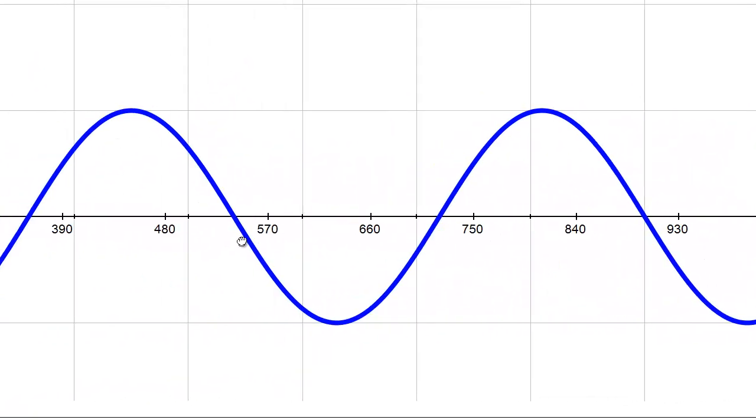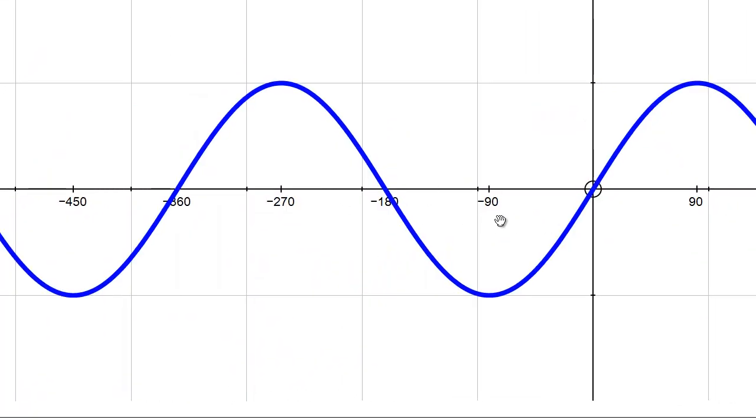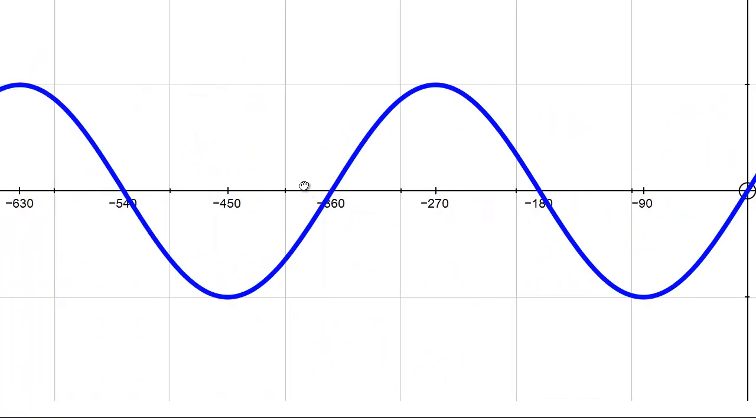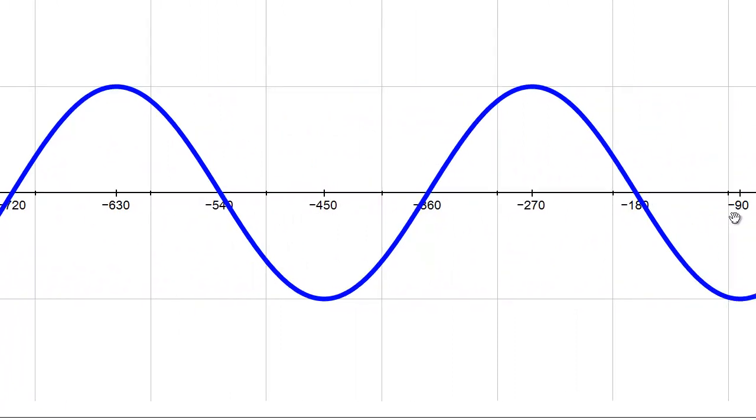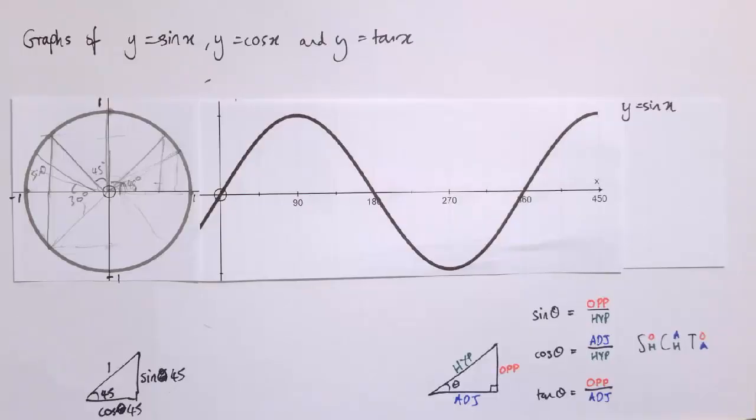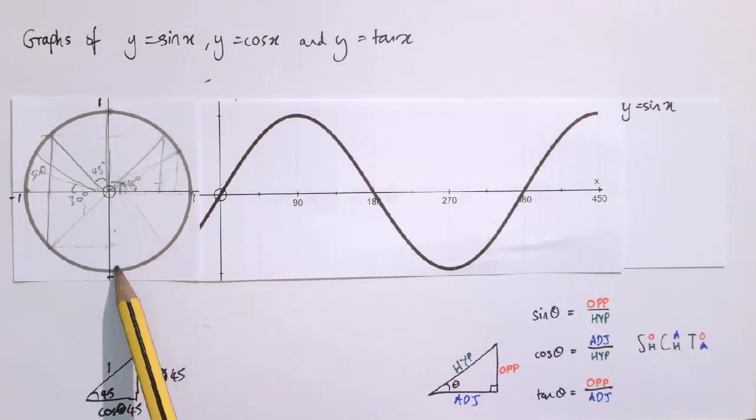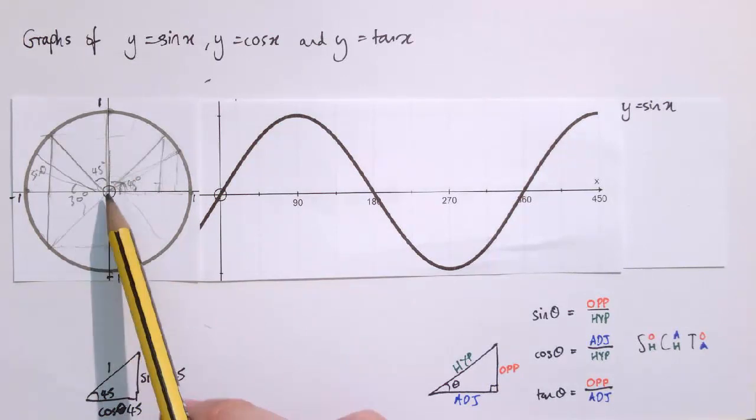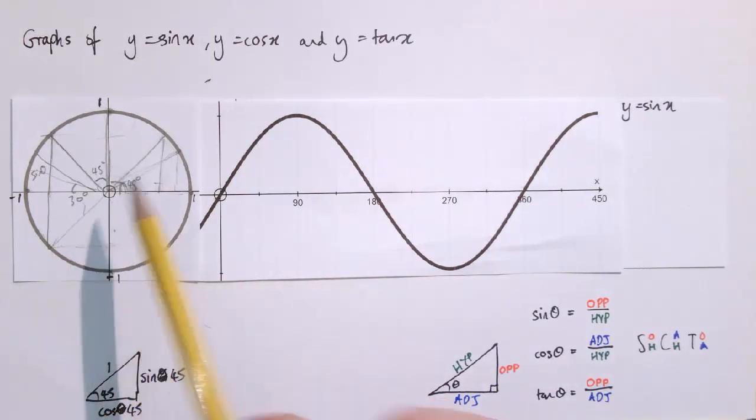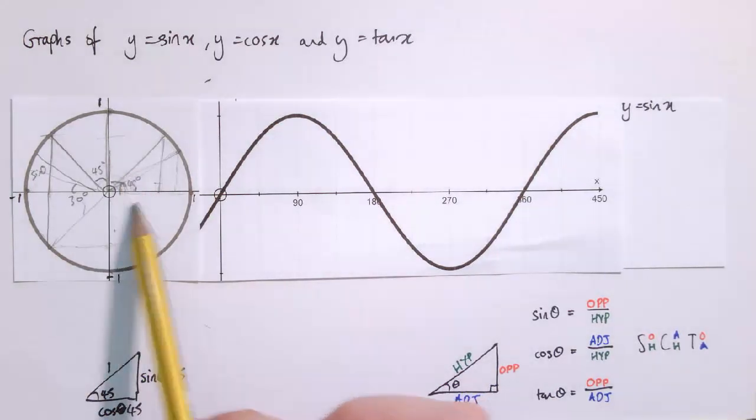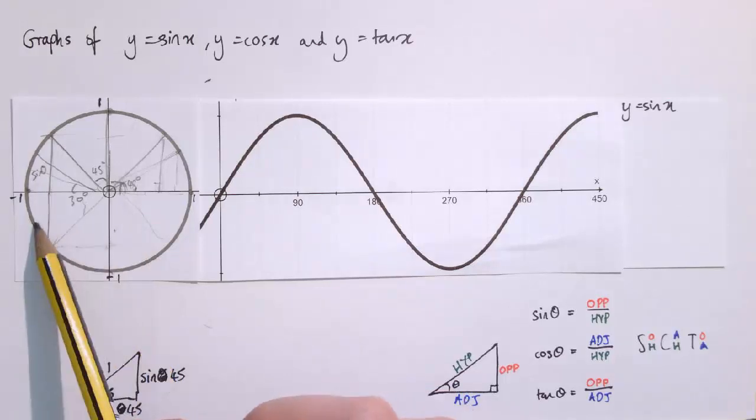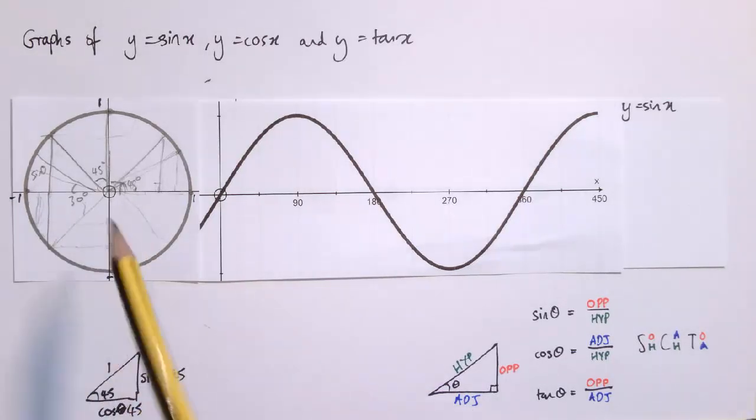And of course we could also go back in the other direction and start defining negative values in the same way. So getting to minus 90 degrees means just going the other way around the circle. So sine of minus 90 degrees, rather than going this way and getting to 90, I come down this way and we get to minus 1. Sine of minus 150 say would be come down here 90 degrees and another 60 degrees. It would be this negative value in here.